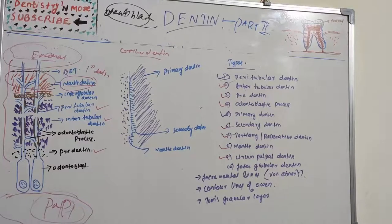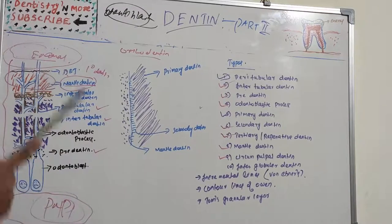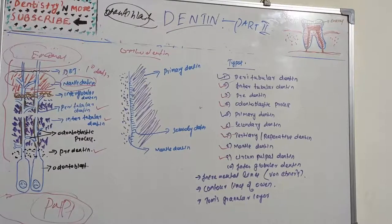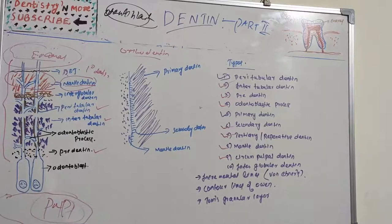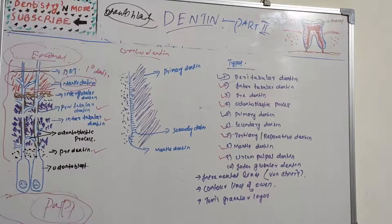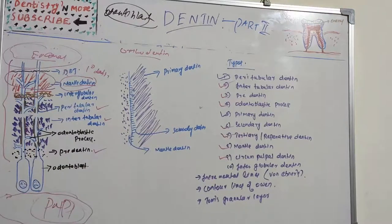Primary dentine is dentine that is formed prior to eruption of the tooth. It is secreted at a relatively higher rate and constitutes the major part of dentine in the tooth. Mantle dentine is the first-formed dentine in the crown, underlying the DEJ. Dentinal tubules form an S-shape as a result of the directional movement of odontoblasts. Secondary dentine is formed after root completion.